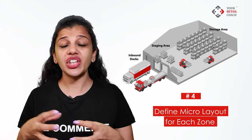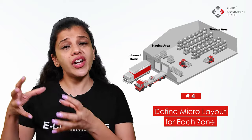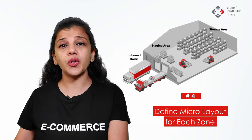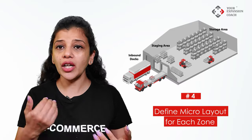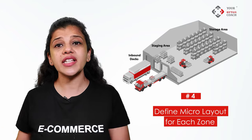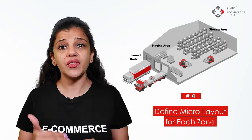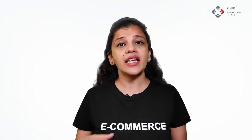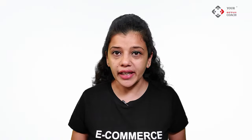Step four: define the micro layout for each zone. Now start micro planning within each zone. For example, for the orange inward zone: from where shall the goods enter, where shall they be kept for staging during inward, average size of the consignment expected, equipment required for unloading and their size specifications, space required while unloading and keeping goods in the inward staging area, and space to keep the pallets which need to be given back to the transporter. While you micro plan for each zone, the zone size might increase or decrease, which is absolutely fine.